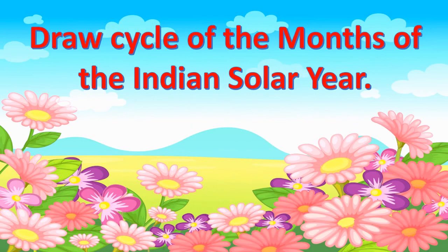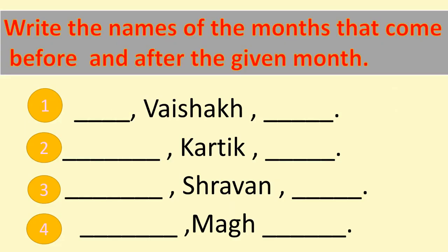Children, write the names of the months that come before and after the given month. 1st: blank, Vaishak, blank. 2nd: blank, Kartik, blank. 3rd: blank, Shravan, blank. 4th: blank, Magh, blank.